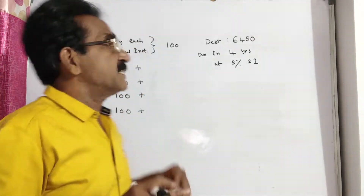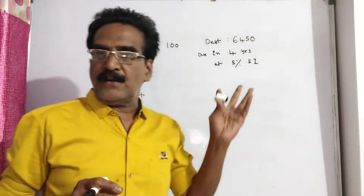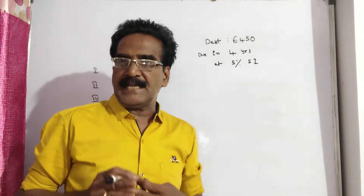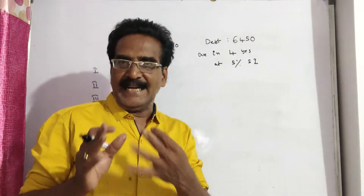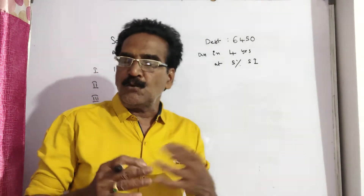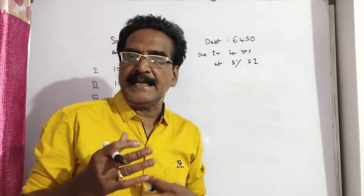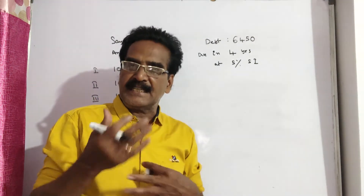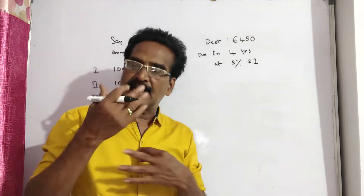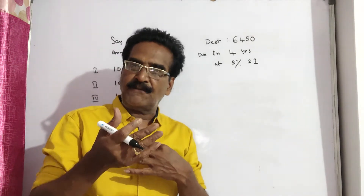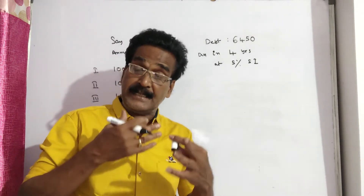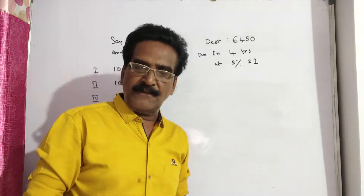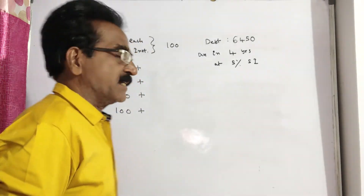Let each annual installment be Rs. 100. That means you pay Rs. 100 at the end of the first year, another Rs. 100 at the end of the second year, another Rs. 100 at the end of the third year, and the last Rs. 100 at the end of 4 years.